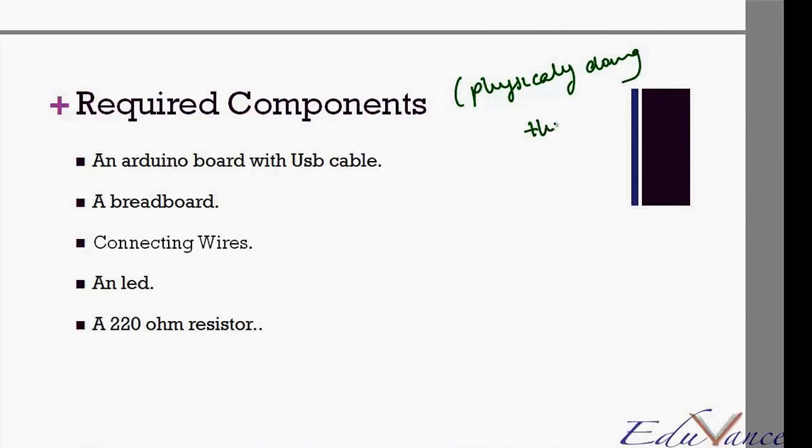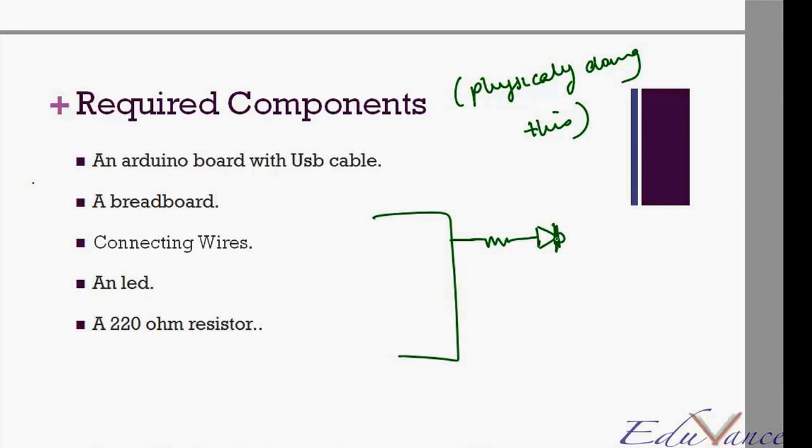You would have an Arduino board, and then you would connect a resistor, then you would connect the anode of your LED, and then the cathode to ground. This would be pin number 4, and this would be your 220 ohm resistor. All right, now this lab will be discussed by the TA, that is the teaching assistant, in terms of the implementation.